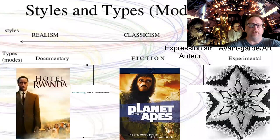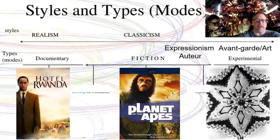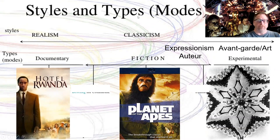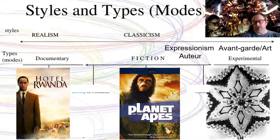When we look at styles and types or modes of filmmaking, in your notes you'll see a chart from your book. It basically establishes we go from realism all the way to formalism. Realism is the stuff that is real and tends towards the documentary style. Formalism is that experimental side, with the idea of a lot of editing, informal kind of content, and later on the avant-garde art experiential movements.